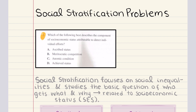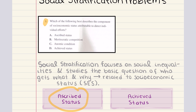Problem number one asks: which of the following best describes the component of socioeconomic status attributable to direct individual efforts? When we started our lecture, we talked about social stratification being based on socioeconomic status, which depends on ascribed status and achieved status. Ascribed status is involuntary and derives from clearly identifiable characteristics like age, gender, skin color, etc. On the other hand, achieved status is acquired through direct individual efforts. So the correct answer for one is D.